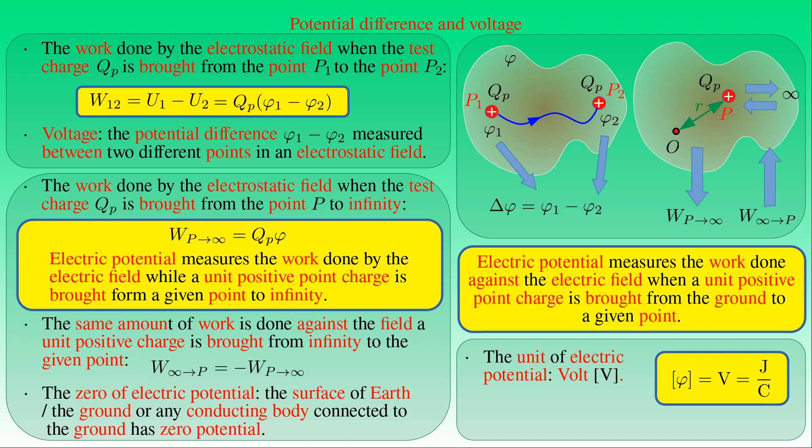The unit of energy and work is also given in electron volts (eV). One electron volt is defined as the work done by the electrostatic field when an electron of elementary charge e is brought through a potential difference of one volt. Since the elementary charge equals approximately 1.6 × 10⁻¹⁹ coulombs, one electron volt is equivalent to 1.6 × 10⁻¹⁹ joules.